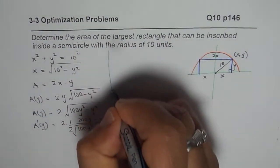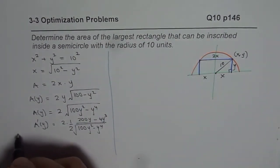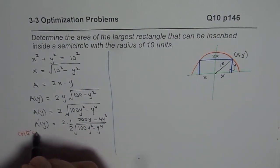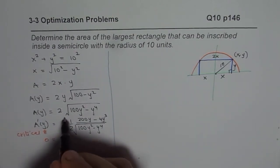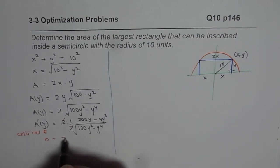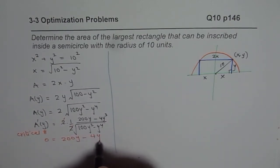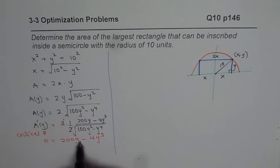Now we can find the critical number. For critical number, A prime y should be 0. So let's find the critical number. So when you equate this to 0, the 2 and 2 cancel, the numerator should be 0. So that is to say 200y minus 4y cubed equals to 0. So let us solve this equation and find what is the value of y in this particular scenario.